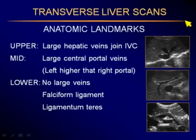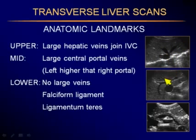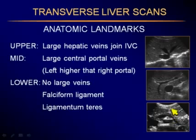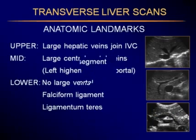Looking at anatomic landmarks on transverse scans: in high portions of the liver, we see large hepatic veins coming together into the inferior vena cava. In the mid portions, we see portal veins horizontally situated with bright walls. In lower transverse sections, we don't see big veins — instead we see an echogenic line where the falciform ligament and the umbilical fissure, the fissure for ligamentum teres, come in. This marks the lower parts of the liver, telling us whether we're scanning high, mid, or low.